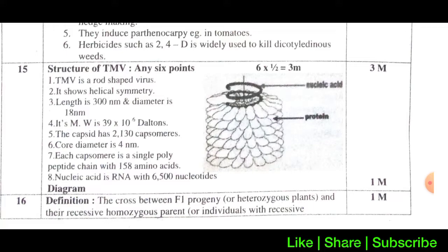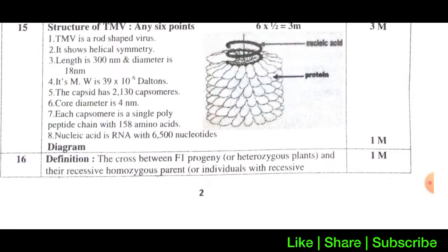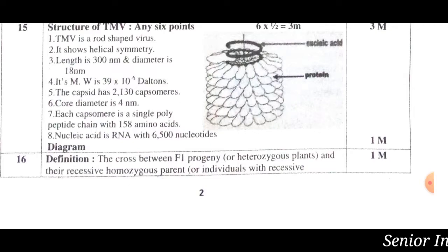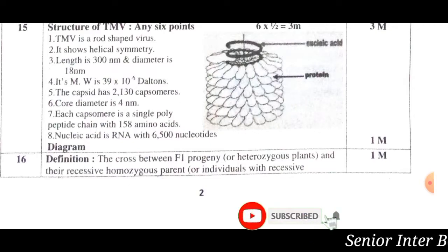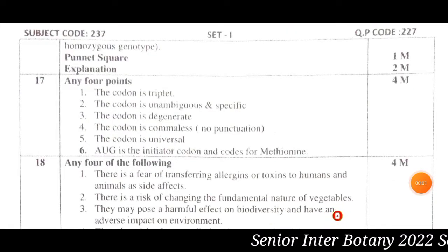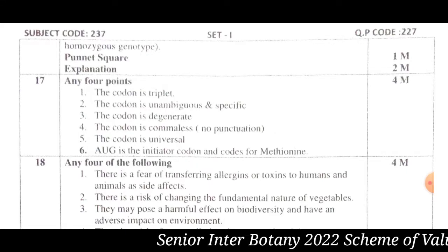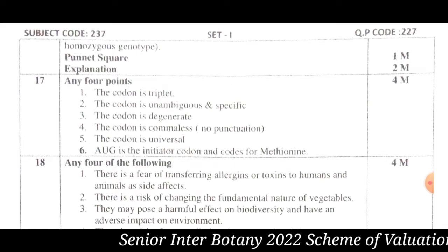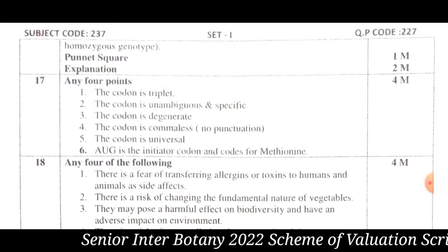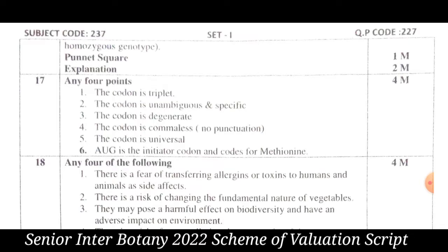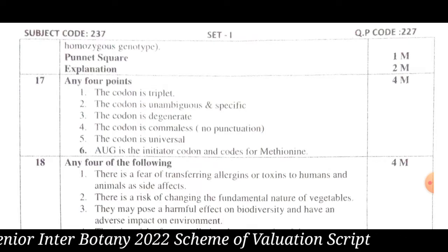You can check the correct marks in the text. The definition is 1 mark, the checkerboard point is 2 marks, and the explanation is 1 mark. So definition is 1 mark, the checkerboard/Punnett square point is 2 marks, and the explanation is 1 mark.